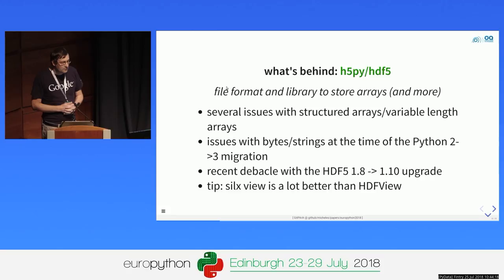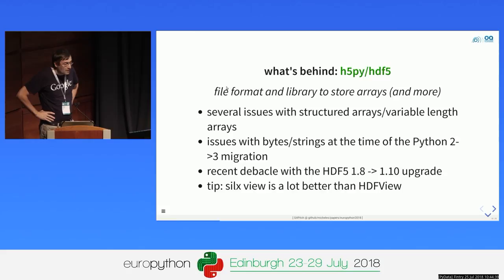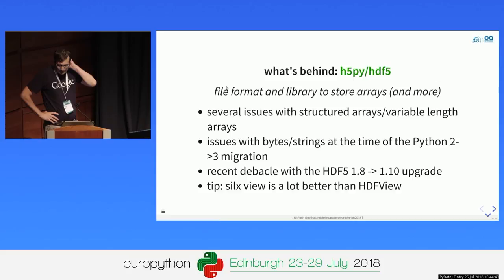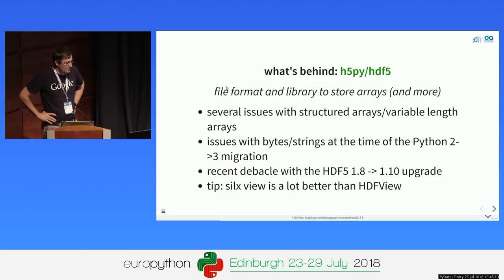We also use a lot of H5PY, which is a Python wrapper built on top of the HDF5 library in C. It's a very good library if you have to store arrays — and more than arrays. You can also store attributes of these arrays. It's hierarchical. It's very efficient. The C part is more than 20 years old; the H5PY Python part is newer but has also been there for a long time. Still, I would say it is not perfect and is on a level of maturity much less than NumPy. We have issues.